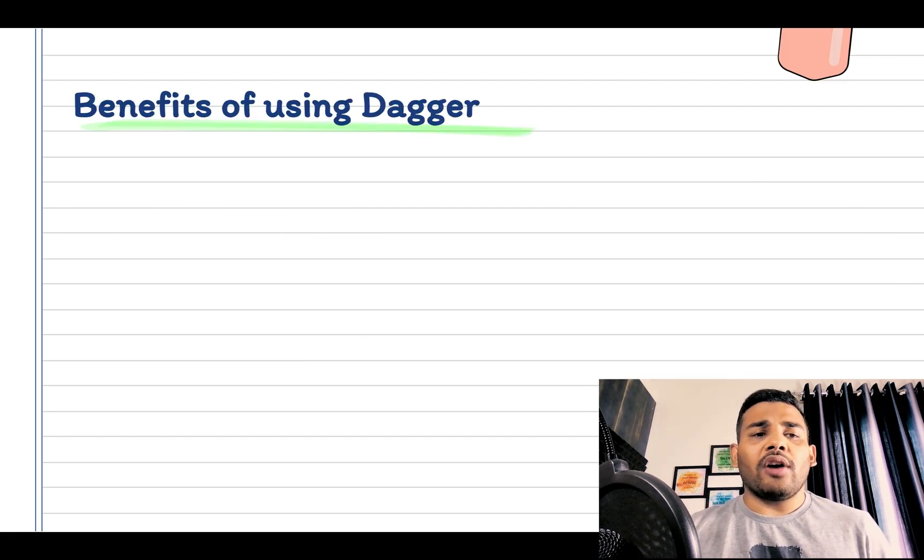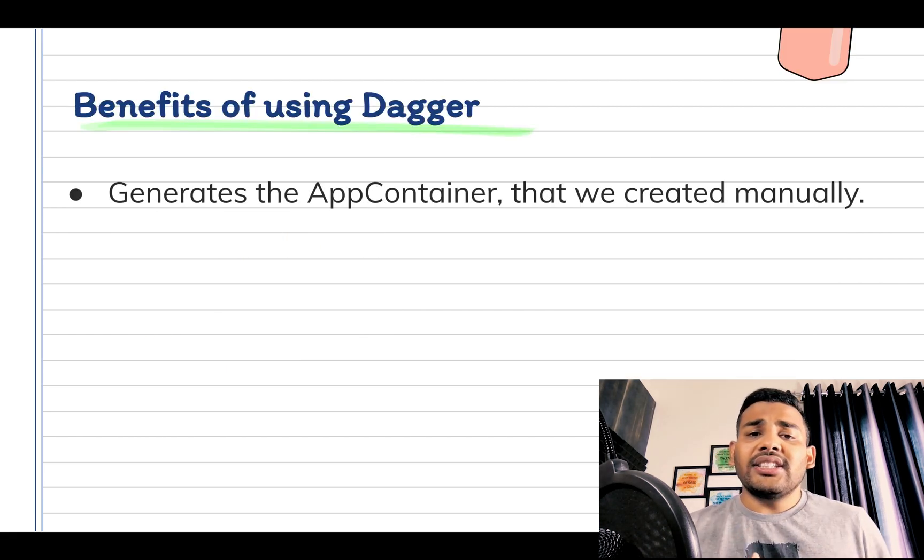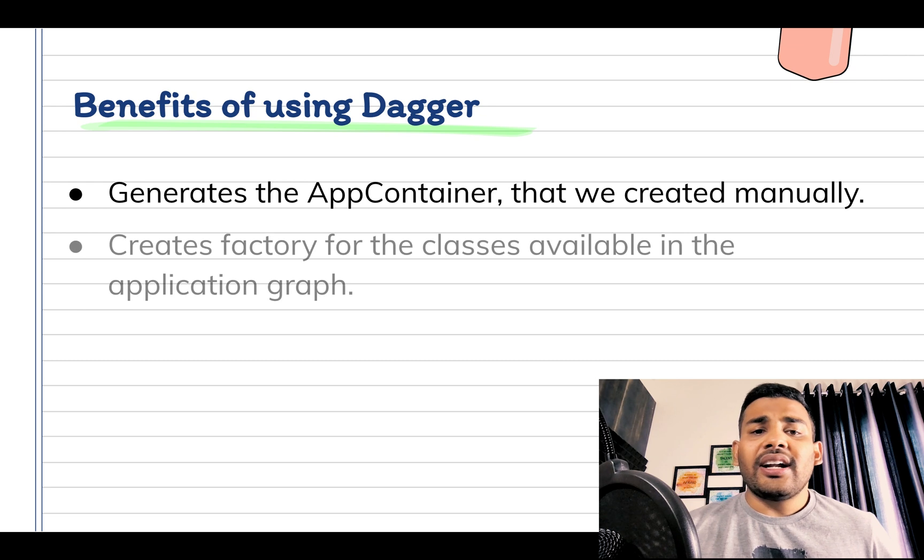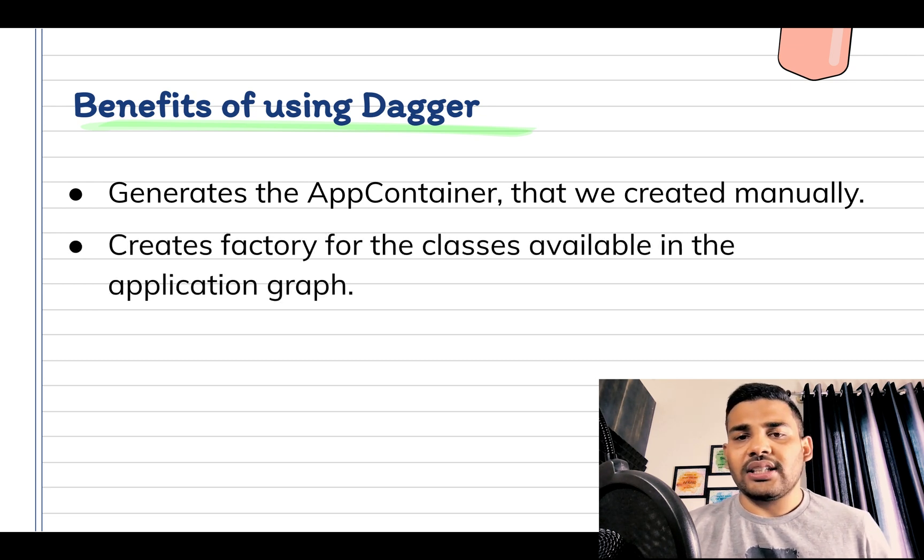The benefits of using Dagger are: it generates the app container automatically at compile time that we created manually in the last video. It creates factories and properties for the classes available in the application graph to satisfy dependencies.